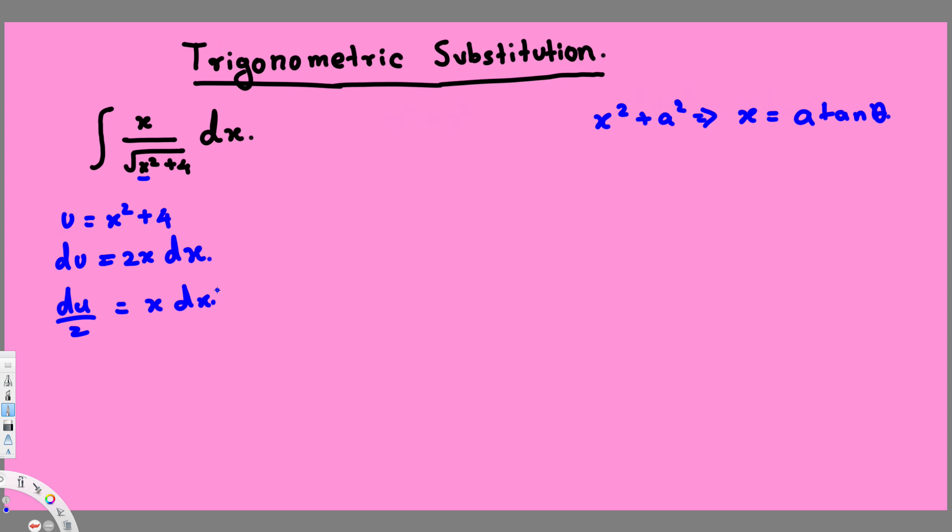Now we can go ahead and write everything in terms of u. So first we have x dx on top, so that's going to be equal to du by 2. So I write du right here and this 2. When we have numbers we can move it to the front.